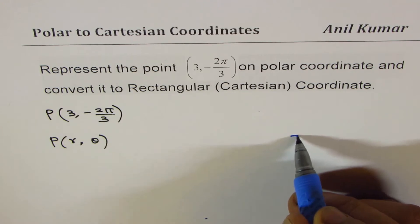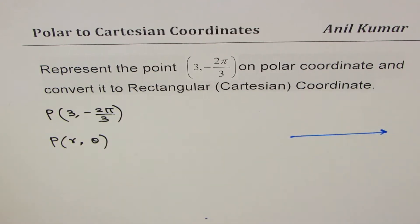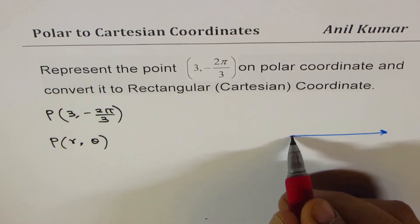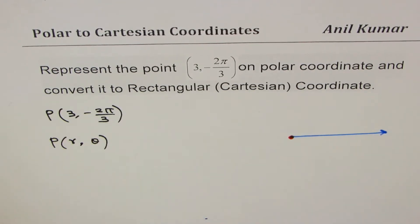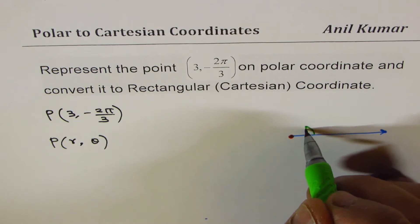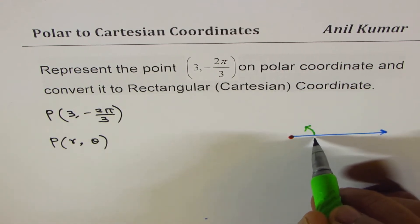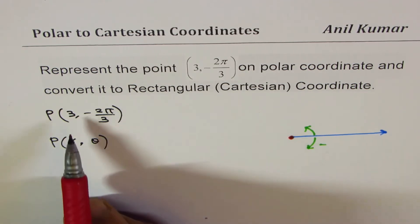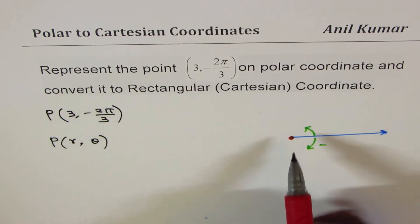Let me sketch this and show you what I'm trying to say. In polar coordinates, we basically have a point which is called the pole, and the angle is measured counterclockwise, which is positive. If you go clockwise, then it is negative.